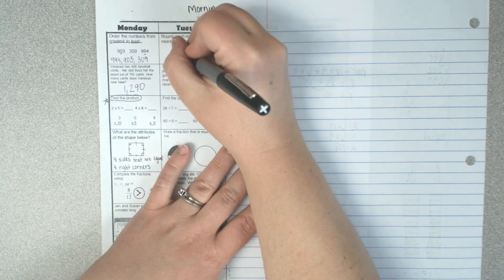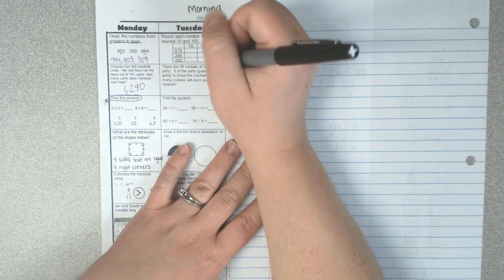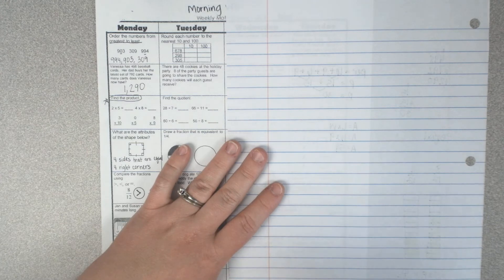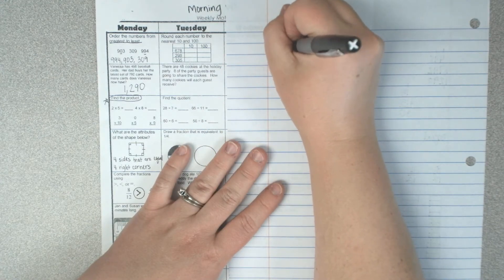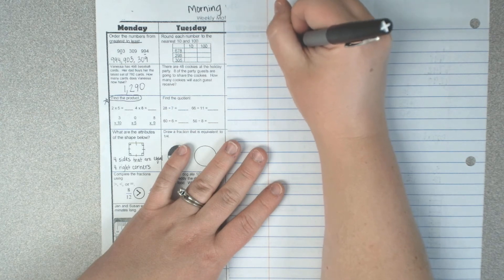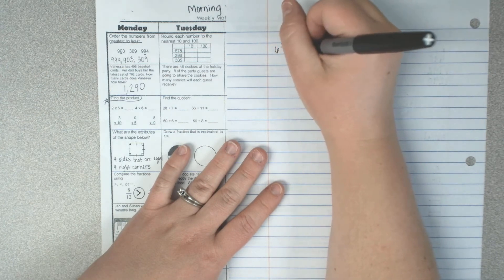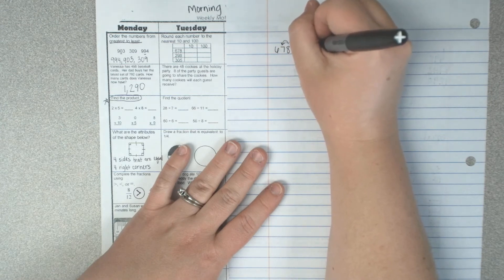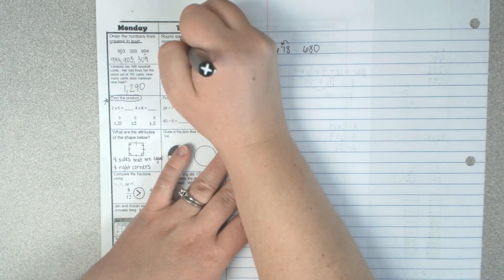So for 678, if I look at the tens, that eight which is in the ones tells my ten to round up or down. So it rounds up. This would be 680.